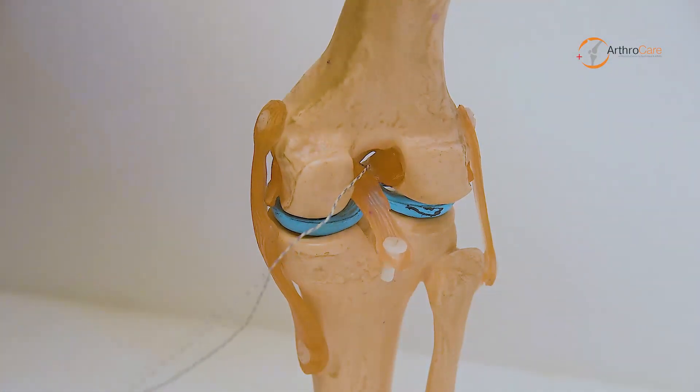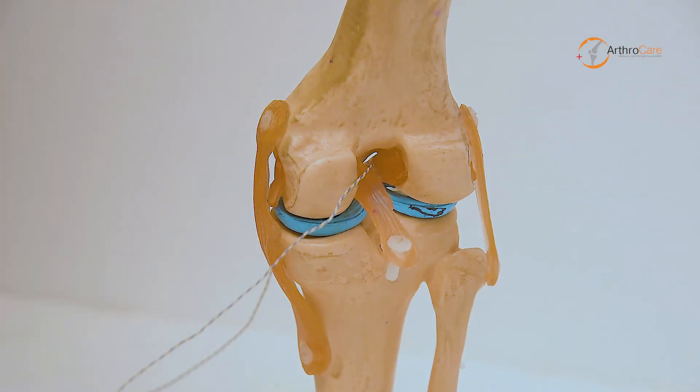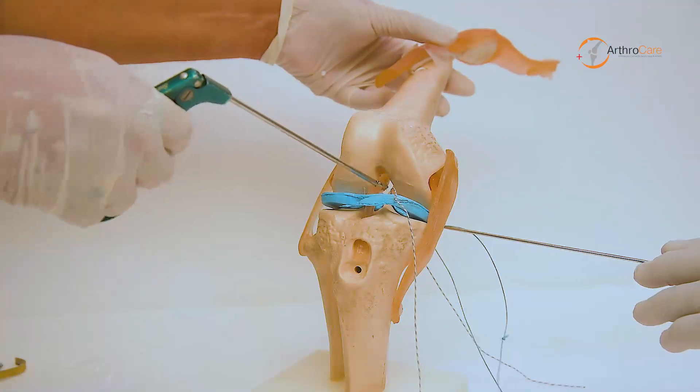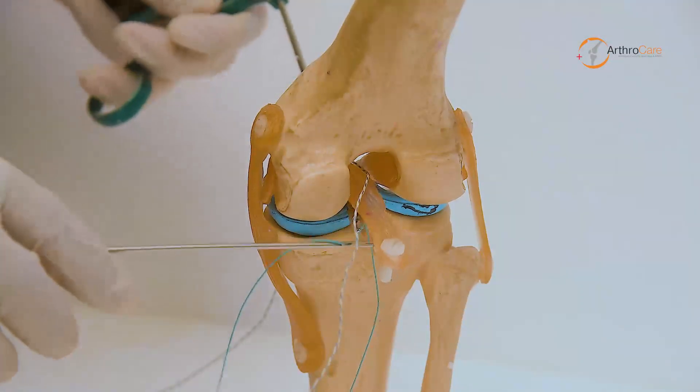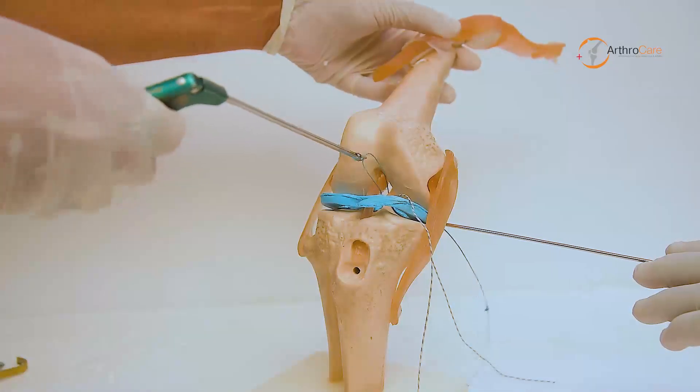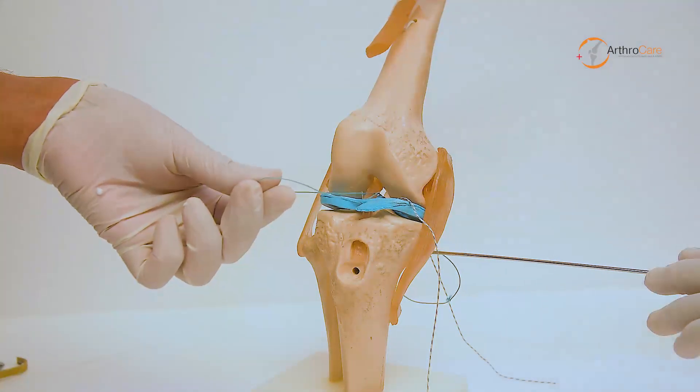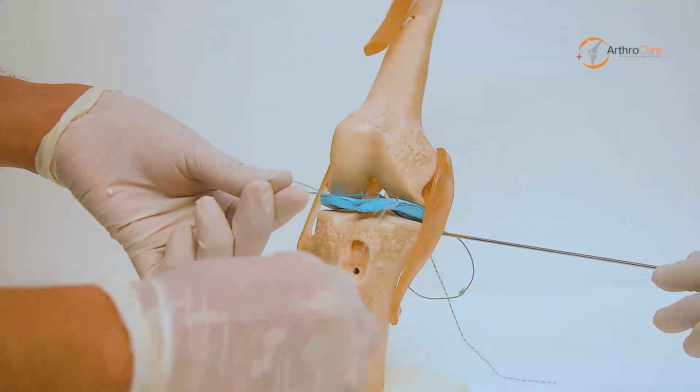With the same technique from below the PCL, the wire loop is pulled anteriorly. Through this pulled loop, two fiber wires are pulled back and brought to the posteromedial portal.